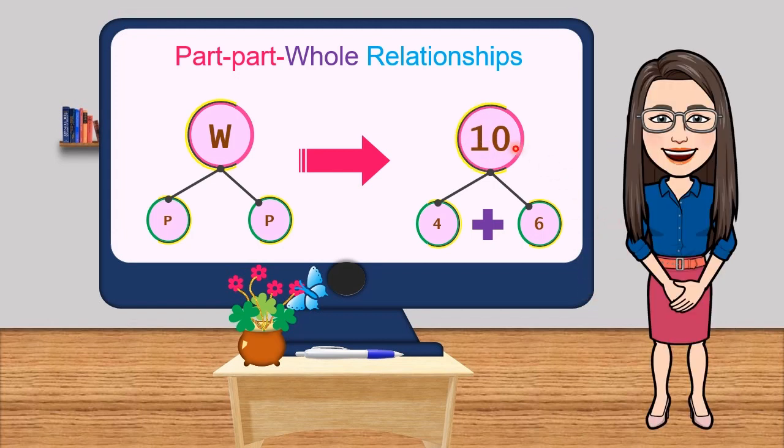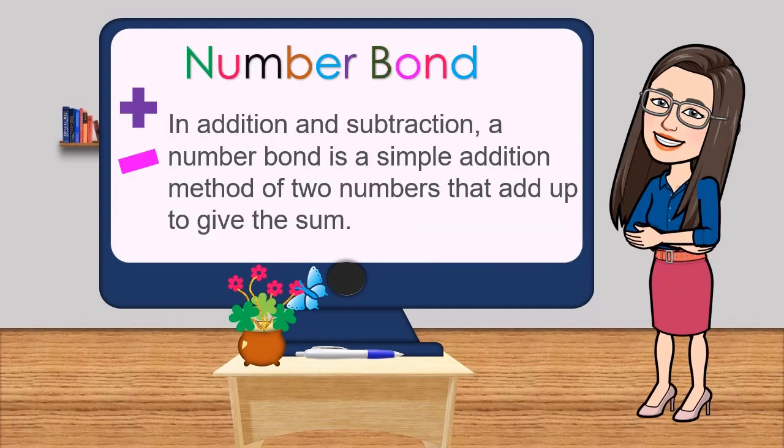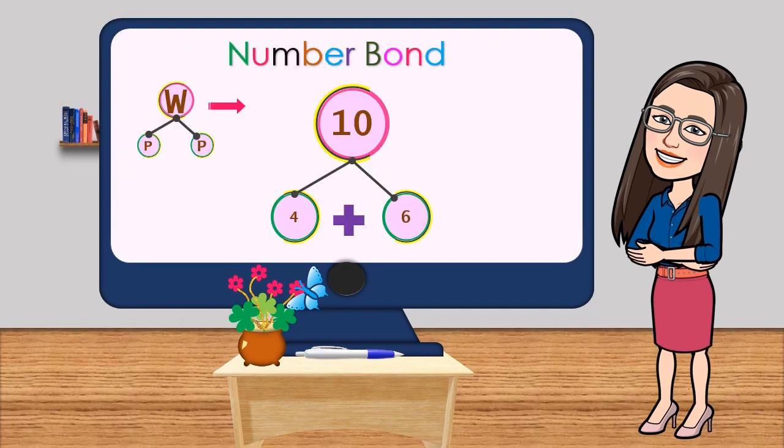In this case, the numbers that bond to 10 are 4 and 6. In addition and subtraction, a number bond is a simple addition method of two numbers that add up to give the sum. Going back to the part-part-whole relationship, the parts are the numbers that bond to the whole. Therefore, 4 and 6 are the parts that bond to 10.